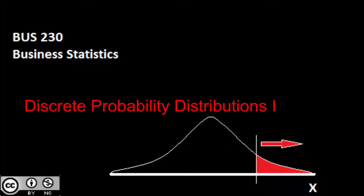So far we've taken a look at probability and counting rules and how they work. Before that we were taking a look at our descriptive statistics — our mean, our median, our standard deviations, our variances. And even before that we were taking a look at our different types of measurement: nominal, ordinal, interval, ratio, and our different types of variables, whether they be discrete or continuous. What we're going to get at today is we're going to start to bring all of this together.